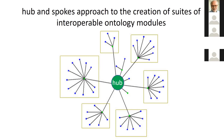The hub would contain terms like object, process, event, quality, and so forth. And the spokes would contain terms like animal, cell, electron, planet, tennis ball, dollar bill, and so forth.